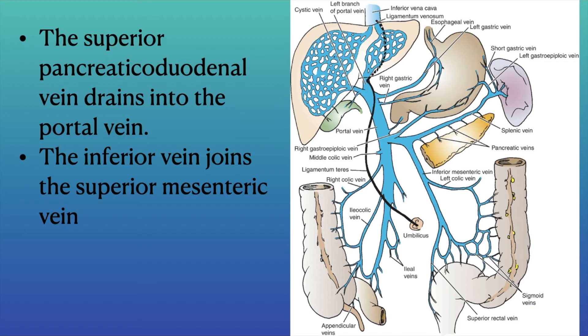The superior pancreaticoduodenal vein drains into the portal vein, while the inferior vein joins the superior mesenteric vein.